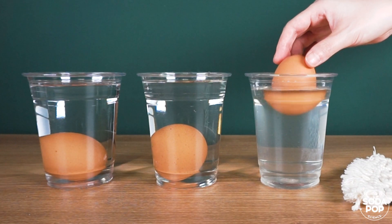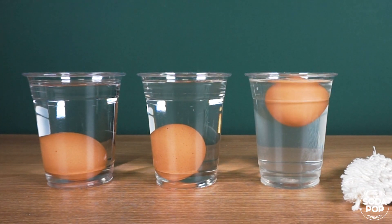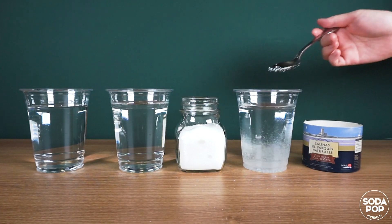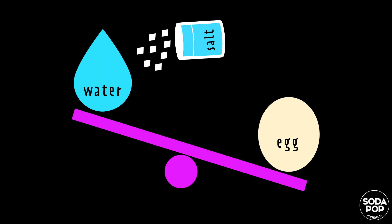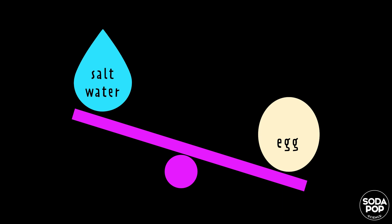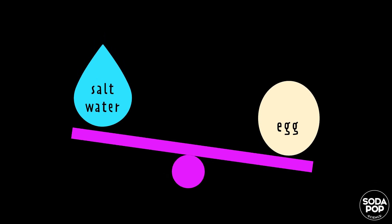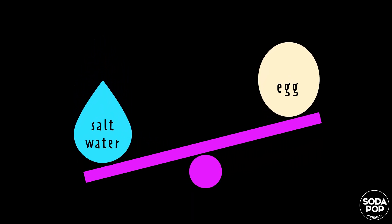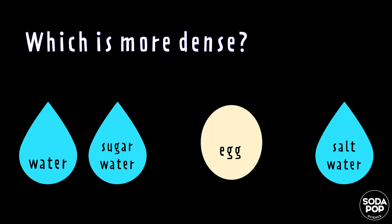But why does the egg in salt water float? When salt is added to the water, it increases the density of the water, and hence the density of the egg becomes lesser than the salt water. So we can say that an egg is more dense than water and sugar water, and less dense than salt water.